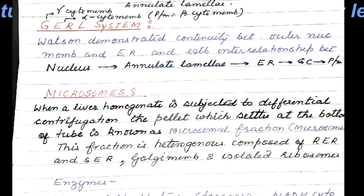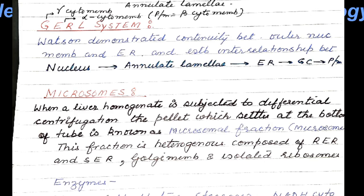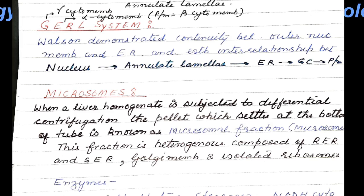Other bodies present in the cell are called microsomes, which are artificially prepared. When a liver homogenate is subjected to differential centrifugation, the pellet which settles at the bottom is known as the microsomal fraction, which contains bodies termed microsomes. This fraction is heterogeneous and composed of rough endoplasmic reticulum, smooth endoplasmic reticulum, Golgi membranes, and some isolated ribosomes.